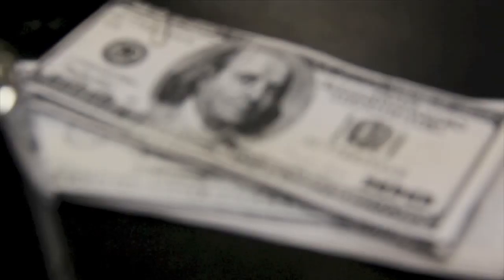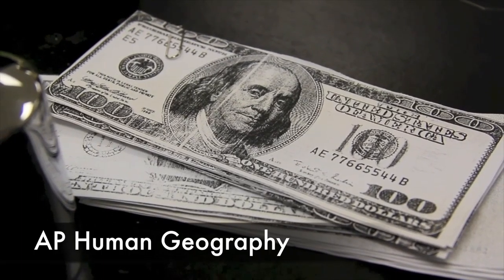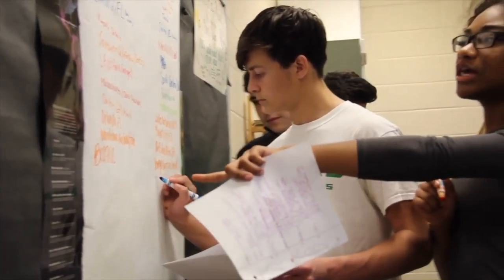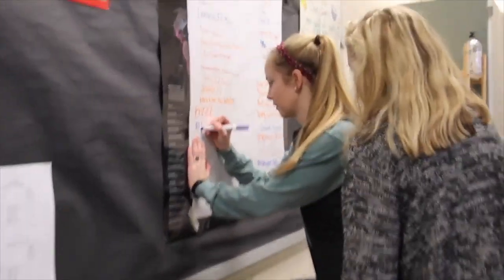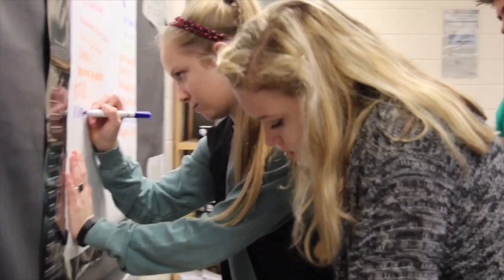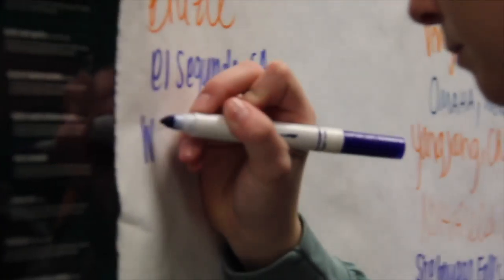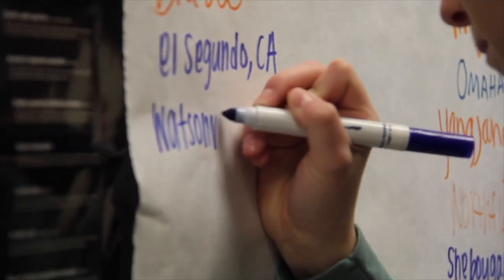In the social studies department there are six offerings in the advanced placement program. AP Human Geography is the study of how humans have developed across the earth. Students look at the development in different areas such as population growth, human migrations, languages, religions, governments, city planning, industrial expansion, agriculture, and rural land use practices.